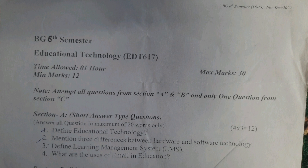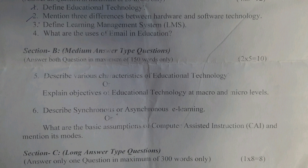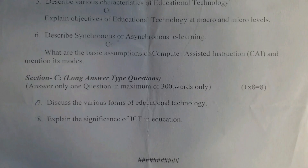Section B — medium answer type questions: 4 × 5 = 20 marks. Question 4: Describe various characteristics of educational technology, or explain objectives of educational technology at macro and micro levels. Question 6: Describe synchronous or asynchronous e-learning, or what are the basic assumptions of computer assisted instruction (CAI) and mention its modes. Section C — long answer type questions: answer only one question in maximum 300 words; 1 × 8 = 8 marks. Question 7: Discuss the various forms of educational technology. Question 8: Explain the significance of ICT in education.